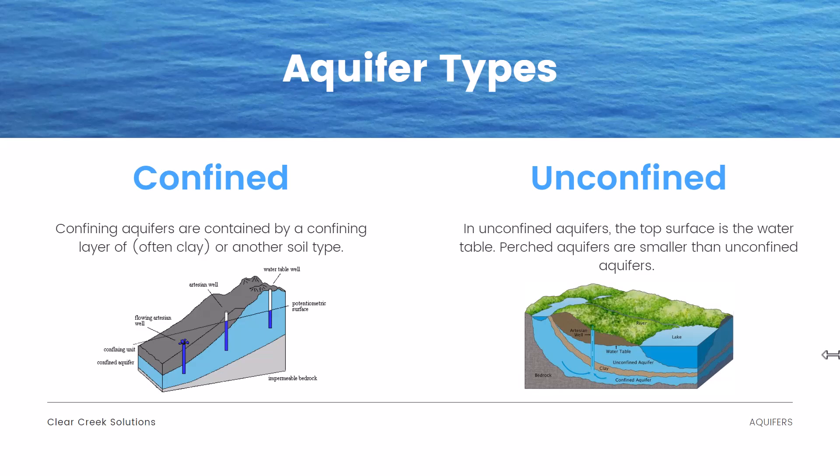So what are the aquifer types? We have confined aquifers, which are contained by a confining layer of often clay or another type of soil. Then we have unconfined aquifers, where the top surface is the water table itself. Perched aquifers are smaller than unconfined aquifers. In the unconfined aquifer, the water table is at the surface, but in the confined aquifer there's another layer of clay in between, so the wells have to penetrate through that layer of soil between the impermeable bedrock.